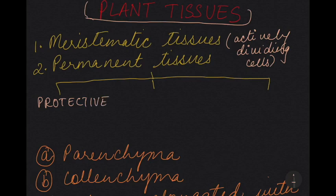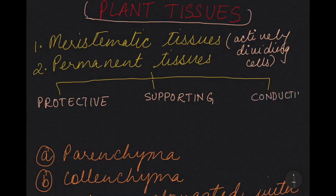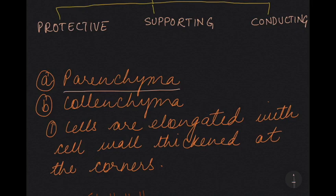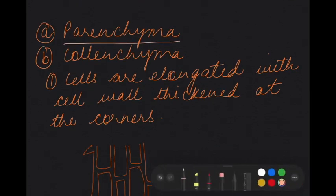The second type was supporting and the third one was conducting. We had already finished with parenchyma — a quick recap: parenchyma are tissues found on the surface of roots, stems and leaves, and the cells had thick walls. Remember, for each tissue you need to know the characteristics, function, structure and location. So moving on to collenchyma, which we had started.